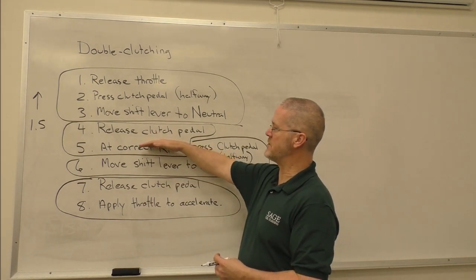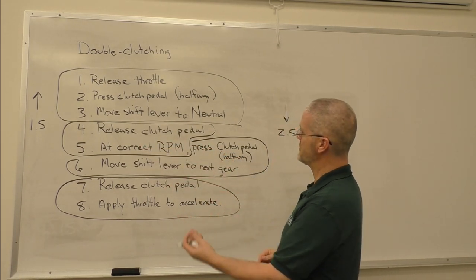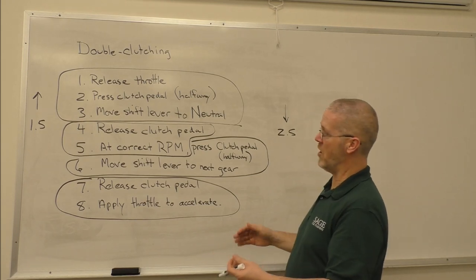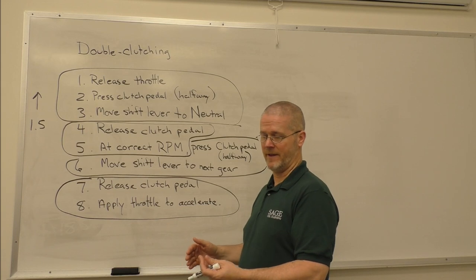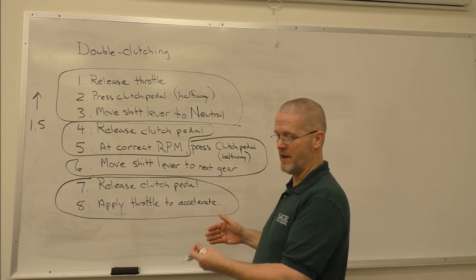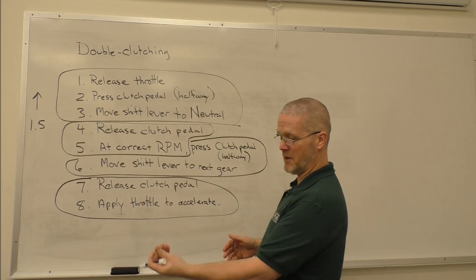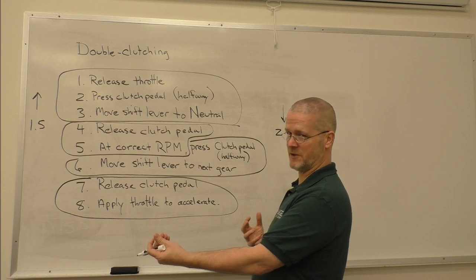But to do the RPM change itself, the clutch has to be closed so that the engine and the transmission are hooked together, because all of our talk about RPM is not engine RPM. It's transmission input RPM. You have to match the speed of the input component of the transmission to the speed of the output component of the transmission.